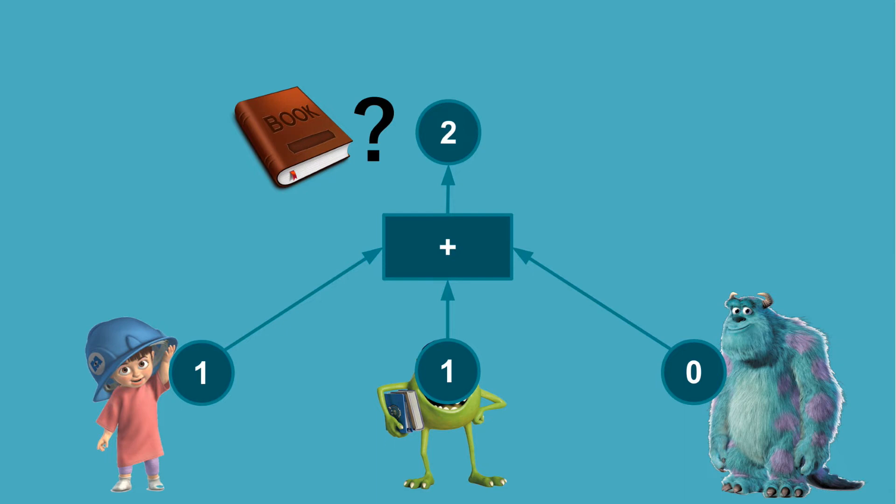That is, if there was a way that the three parties could compute the sum of the votes without revealing who voted what. Of course, since we learn the sum of the votes, there is no way we can avoid Sully learns that both Boo and Mike voted 1. But we should aim to prevent Boo or Mike from learning who was the person that voted 0. This privacy preserving requirement will be the only property of secure multiparty computation that we focus on in this video.